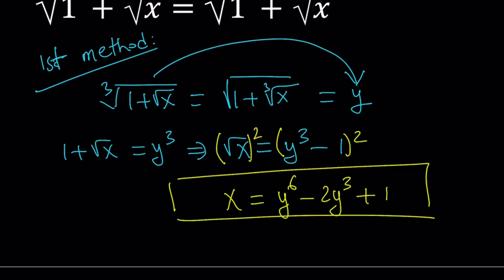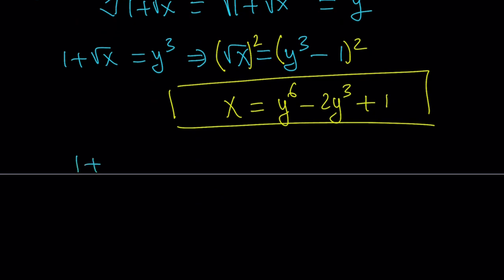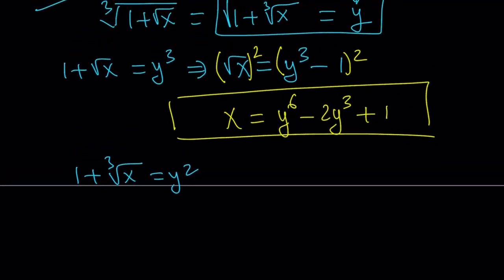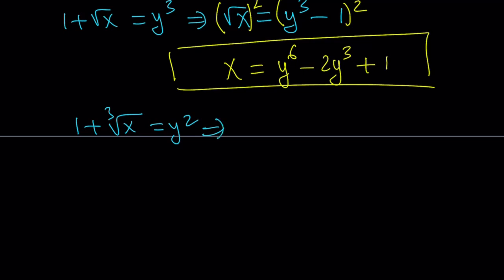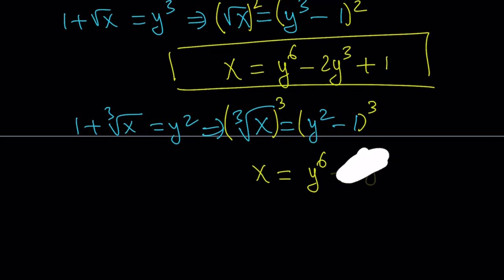Now we're going to do the same thing with the square root. If you square both sides, you're going to get 1 plus the cube root of x equals y squared. If you isolate cube root of x, you get y squared minus 1. At this point, go ahead and cube both sides — not square, because we have a cube root, so you have to raise both sides to the third power. That gives us x equals y to the 6 minus 3y to the 4th plus 3y squared minus 1.